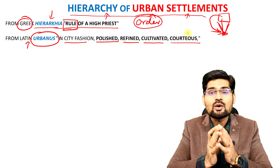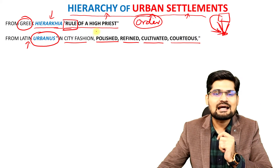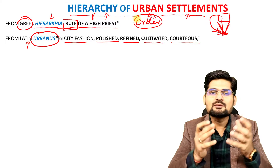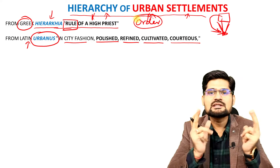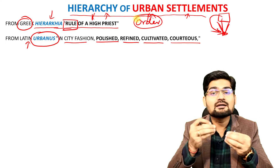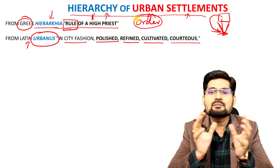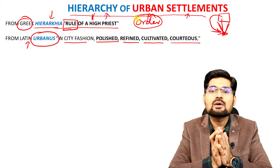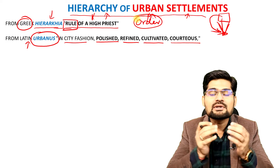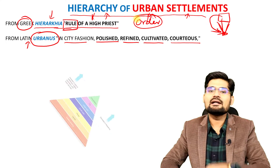So when we combine these two words — hierarchy and urban — it means we are looking into settlement geography through these terminologies: what is the hierarchy in urban settlements? Is there a hierarchy because of some particular reason of urbanization? What is its structure, its function, and what are the components we are going to look into?